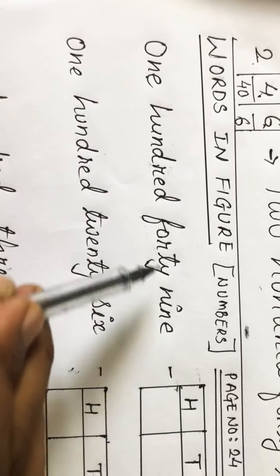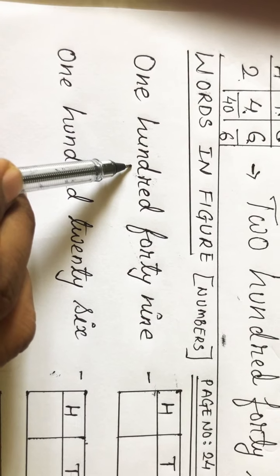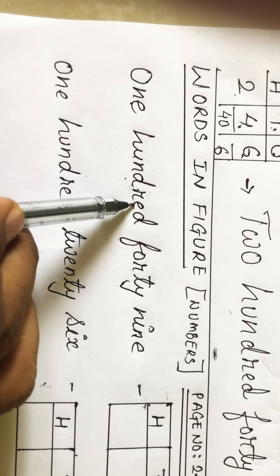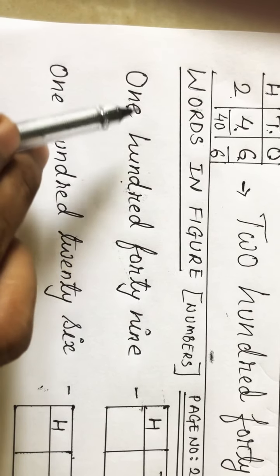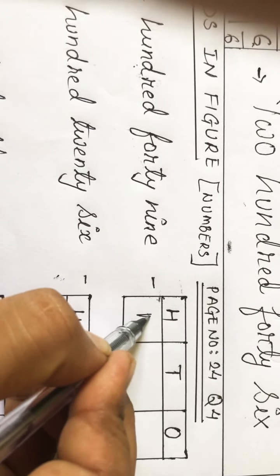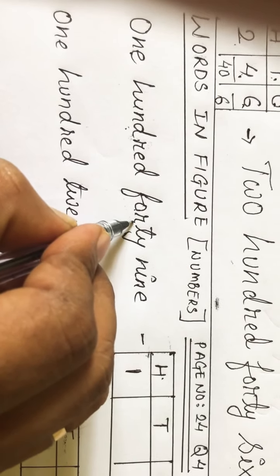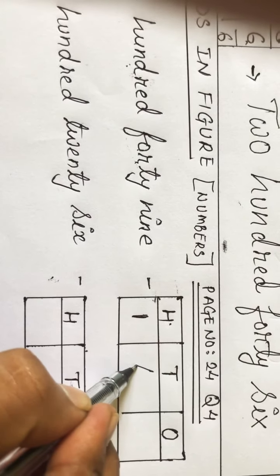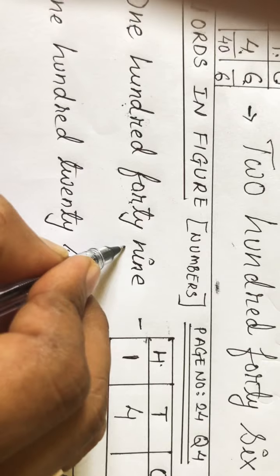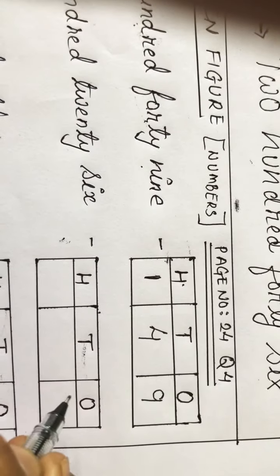Now see the example: 'one hundred forty nine.' Hundred aaya means there should be three digits. One is at hundreds place, so we write one there. Forty means it will be at tens place, so we write four. And last, nine is at ones place, so we write nine. Answer: 1-4-9, one hundred forty nine.